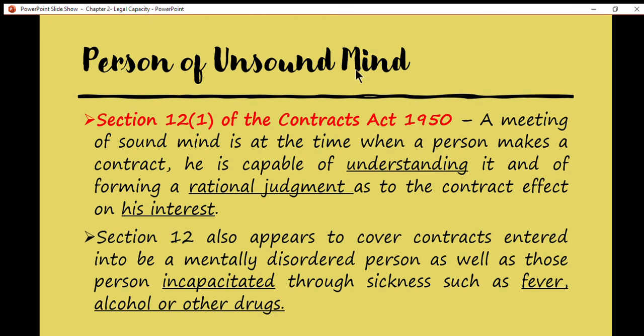Last but not least is the general rule on unsound mind. Based on Section 12(1) of the Contracts Act 1950, a person is said to be of sound mind for the purpose of making a contract if, at the time when he makes it, he is capable of understanding it and of forming a rational judgment as to its effect on his interests. At the time you enter into a contract, you know the interest that will affect you, you can form a rational judgment, and you are capable of understanding the whole contract — then you are considered a person of sound mind.